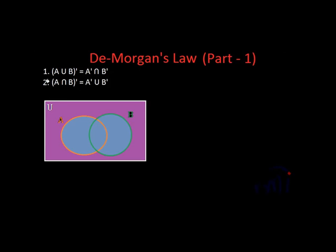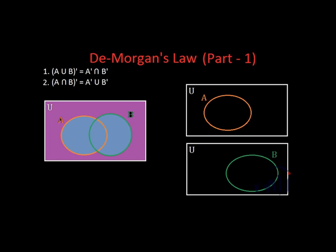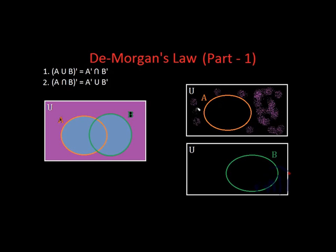This is the left part of the first rule. To understand it better, let me draw two more pictures. In the first picture we have the universal set and set A, and in the second we have the universal set and set B. The orange circle represents set A, and the area representing A dash — the complement of A — is this area outside the orange circle. This area represents all elements of the universal set which are not in set A.